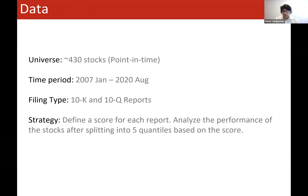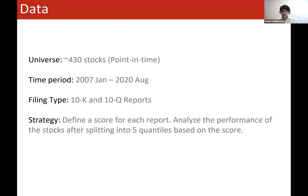Coming to the data: I managed to have a clean dataset of 430 stocks, point-in-time. My time period was from 2007 January to 2020 August, covering both financial crashes. The filing types I looked at were 10-Ks and 10-Q reports. My strategy was to figure out a score for each report published by these stocks, analyze performance by putting them into five quantiles based on the score, and try to create a long-stock strategy.